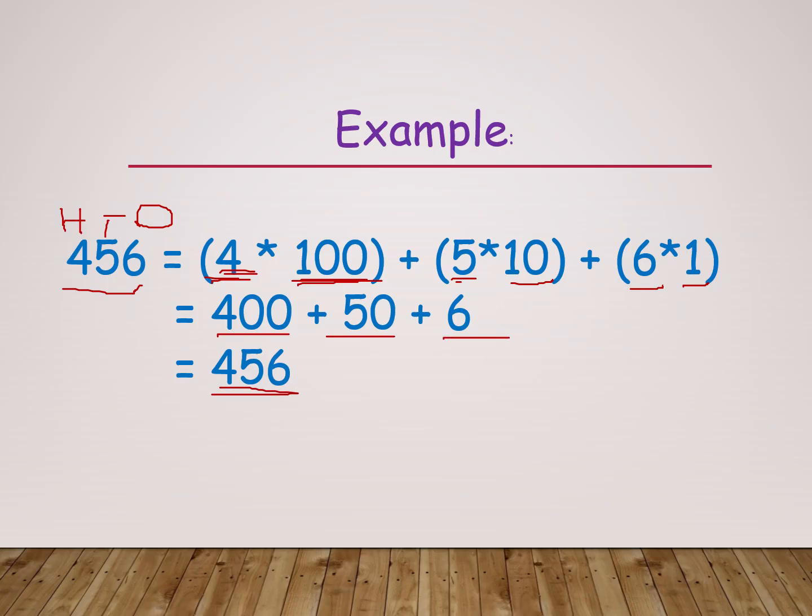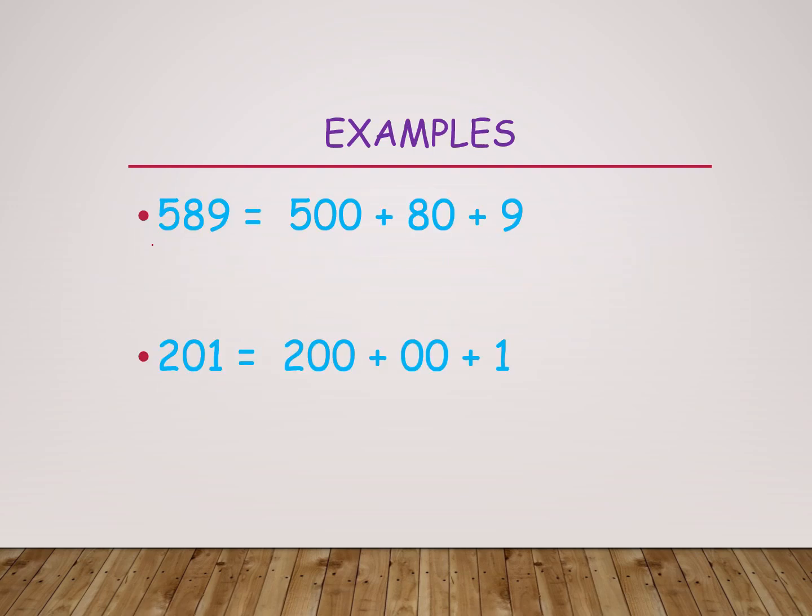Here it is the expanded form of the given number. Next, some more examples. 589 I'm taking. Here also we are writing place values: 100s, 10s and 1s. Here 5 number into 100, 8 number into 10, 9 number into 1. 500 plus 80 plus 9, it becomes 589. This is the expanded form of 589.